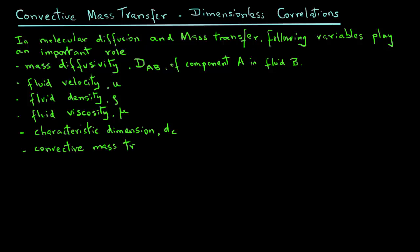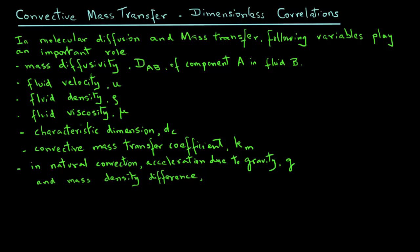The convective mass transfer coefficient, the symbol Km. Now, if you have natural convection, then acceleration due to gravity, symbol g, and mass density differences, that is, delta rho will also play a role.